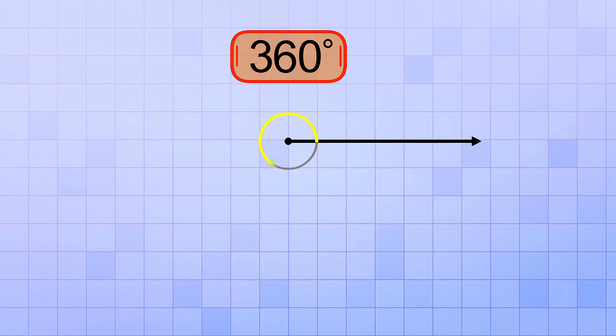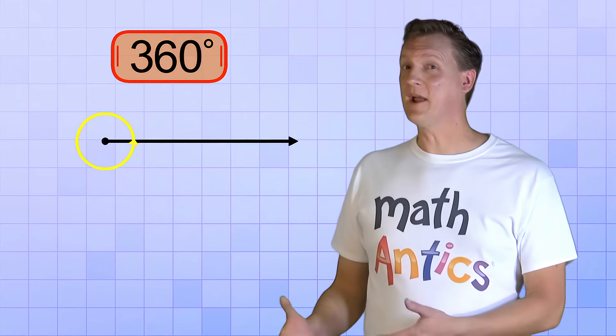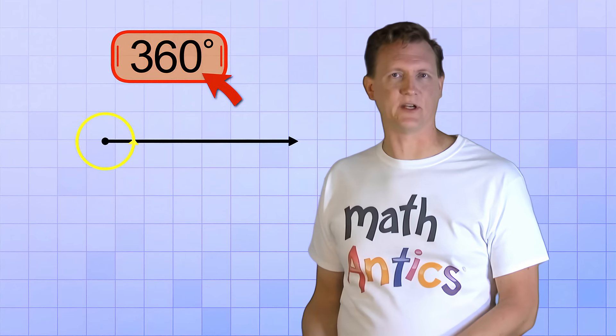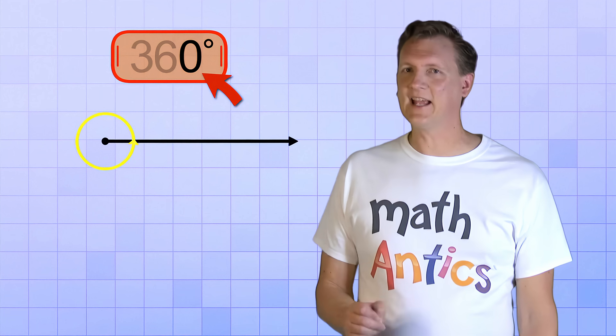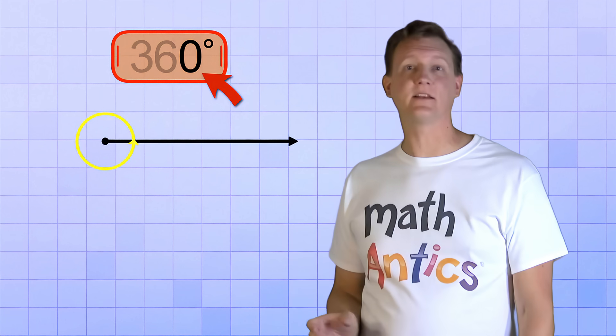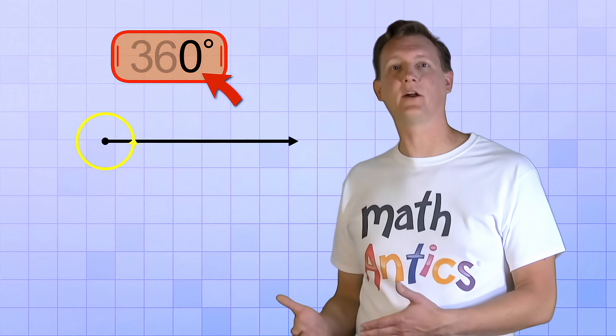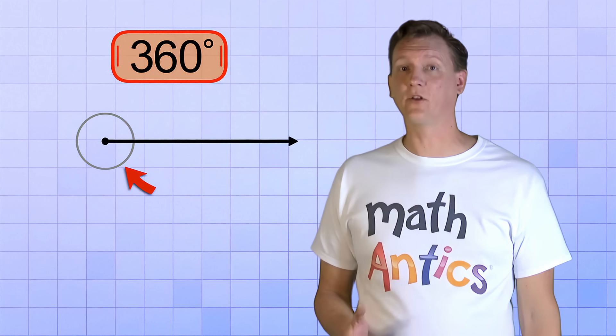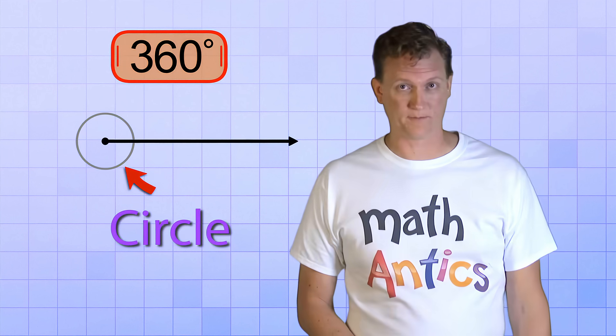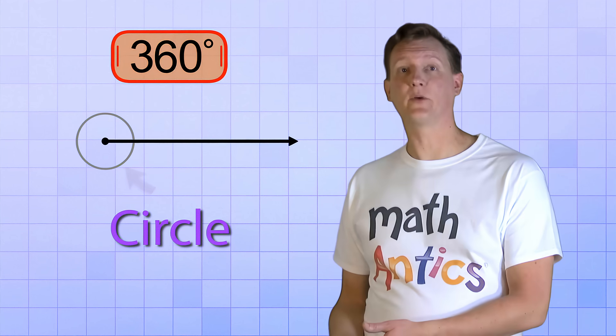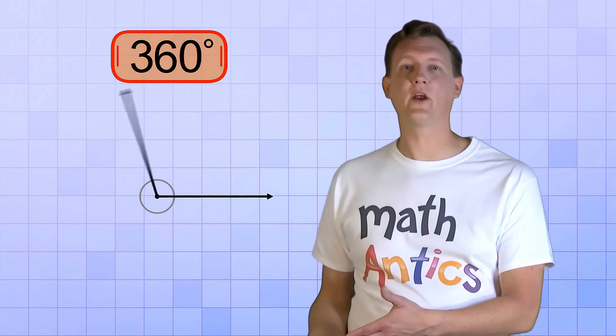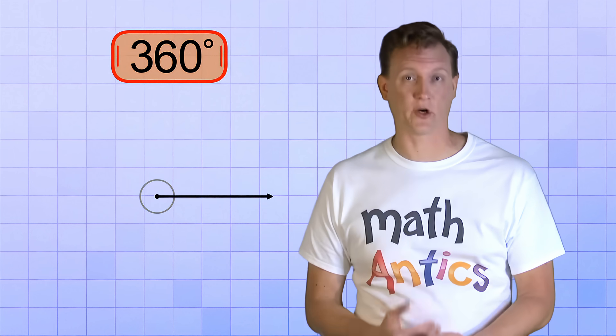We rotated our ray all the way around the axis and now it's back to where we started. Now you might be wondering, if we're back to where we started, then why is our counter reading 360 degrees instead of 0 degrees like before? And the answer is that even though our rays are back to the same place, we had to rotate our top ray 360 degrees to get there. And you can see that our angle arc now forms a complete circle. So 360 degrees is the angle that represents a full circle. Rotating 360 degrees brings you all the way around the circle to the point that you started from.